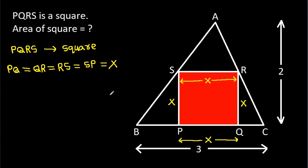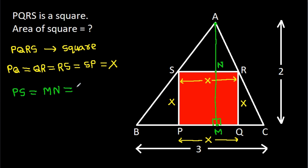Now, from point A, if we draw a perpendicular on BC, suppose this point is M and this point is N. Then PS will be equal to MN, and that will be X. So MN equals X.